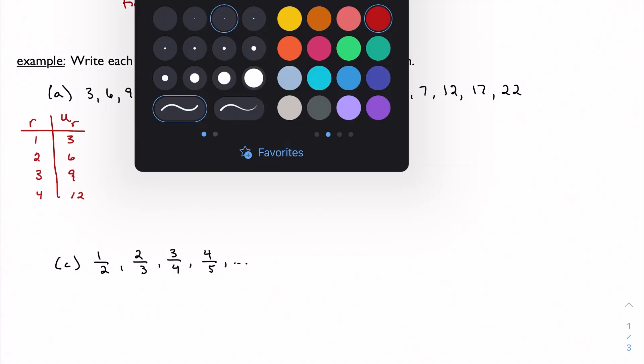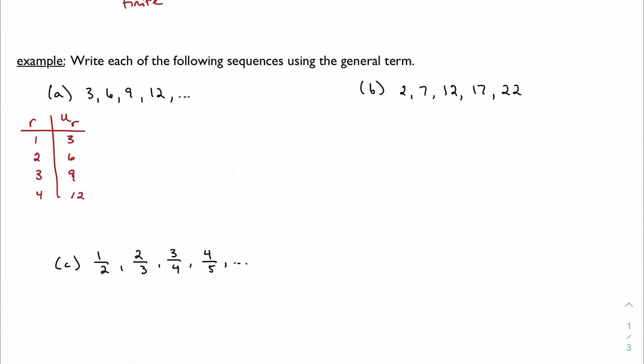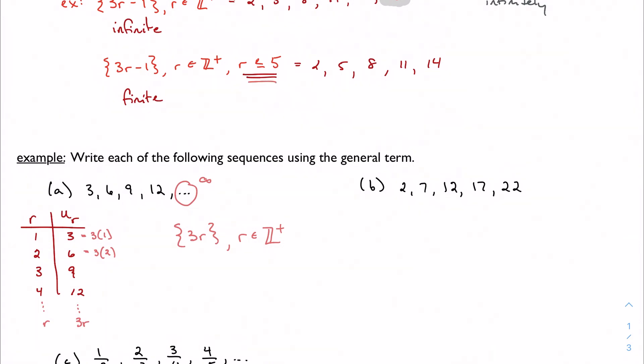Because we notice that to get from term to term, well we're adding 3 every time. But even more simply, we get this just by multiplying our term number by 3. So my general term is 3r. And we just want to state that r is a positive integer. This is an infinite sequence. So we don't need any sort of limitation on r like we did earlier.